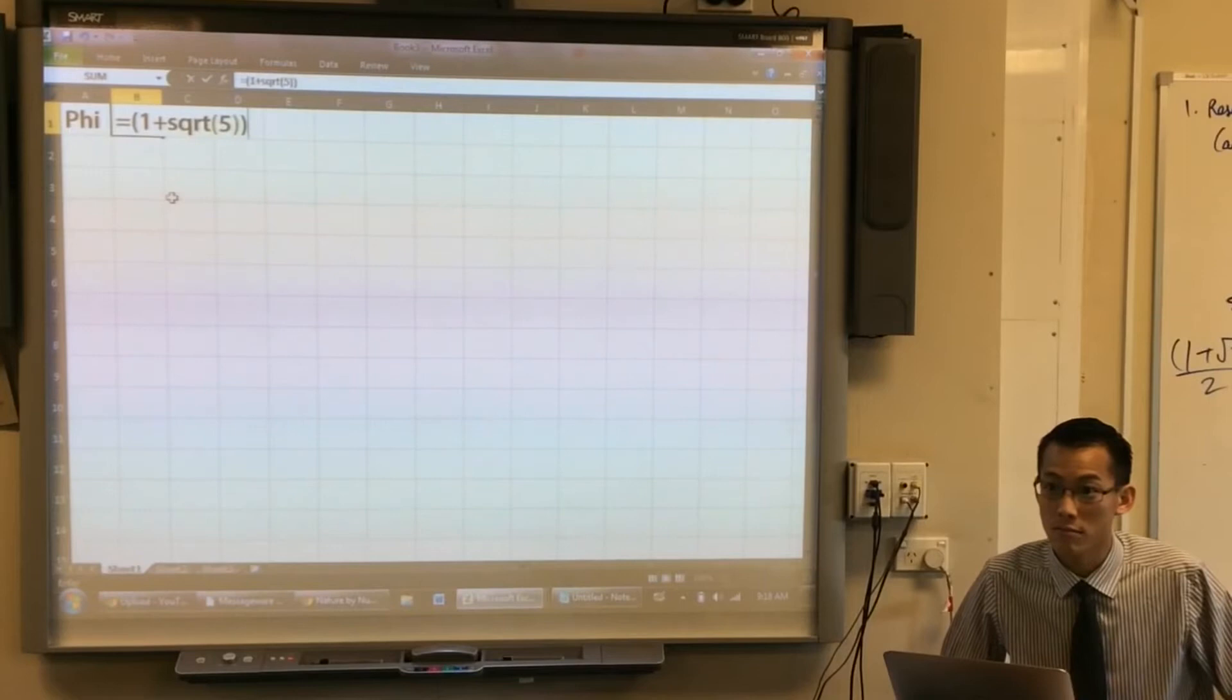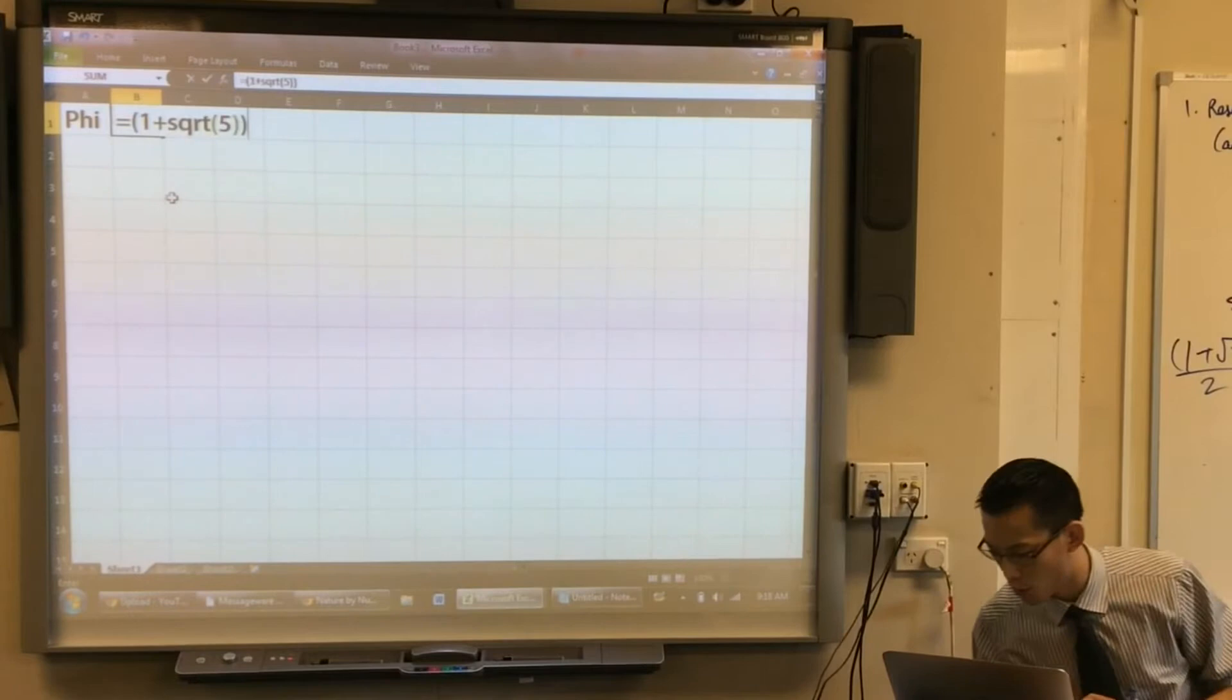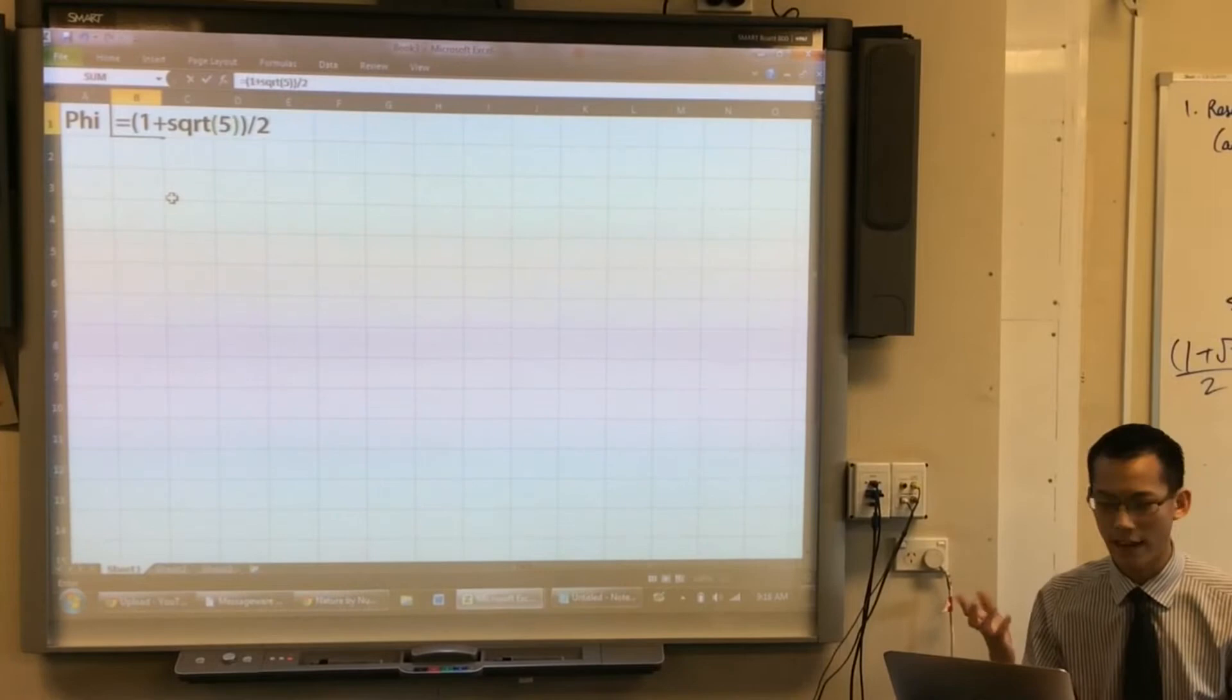You'll see it's recognizing that you're asking it to do a calculation, because there's funny colors and menus come up. Now I'm going to close the brackets. You'll notice I've got two sets of brackets. I've got one around the 5, and then I've got the 1 plus square root 5. That's the numerator. Now, you'll also notice you don't have a division button on your keyboard, but that's okay. All you need is that slash. You want to divide by 2.